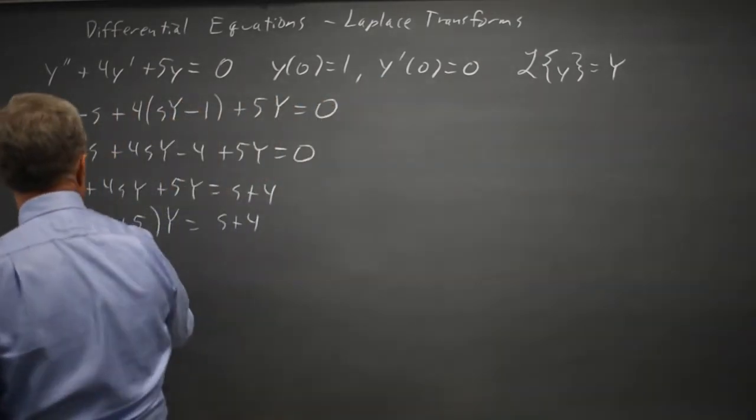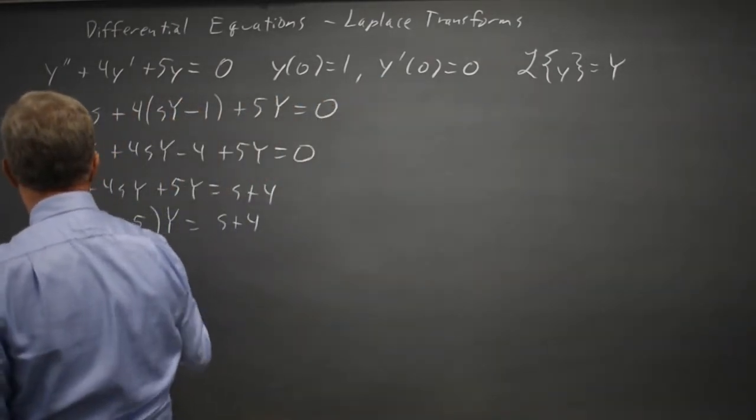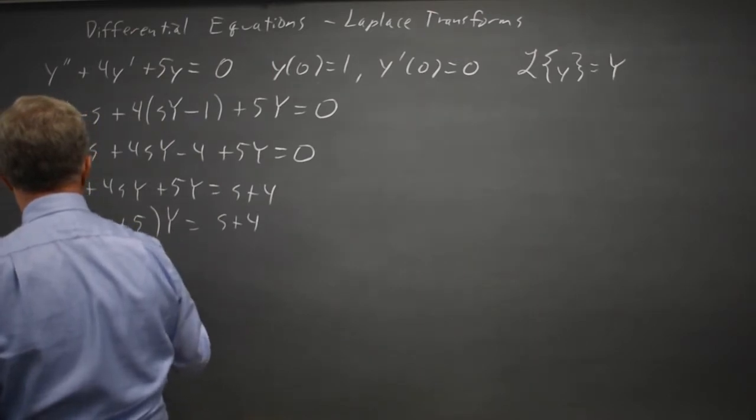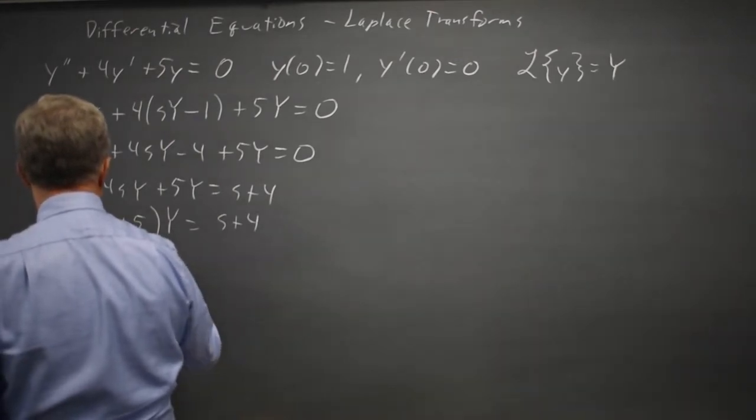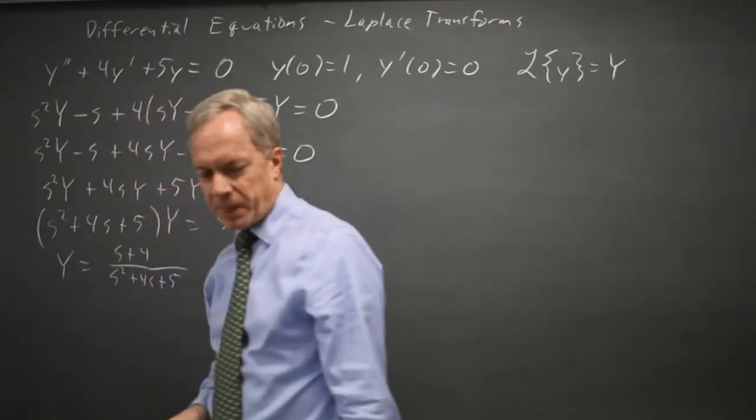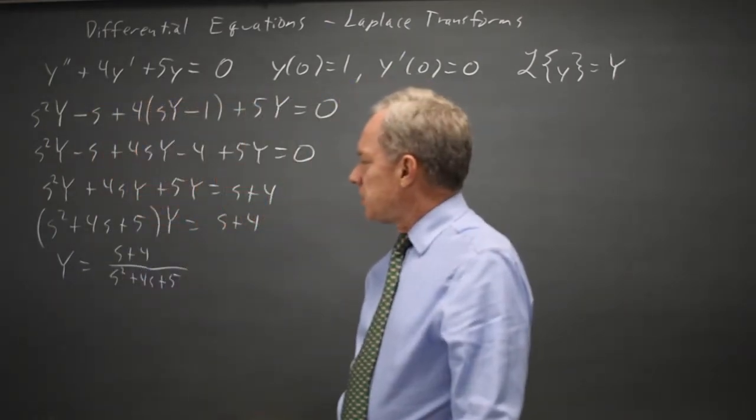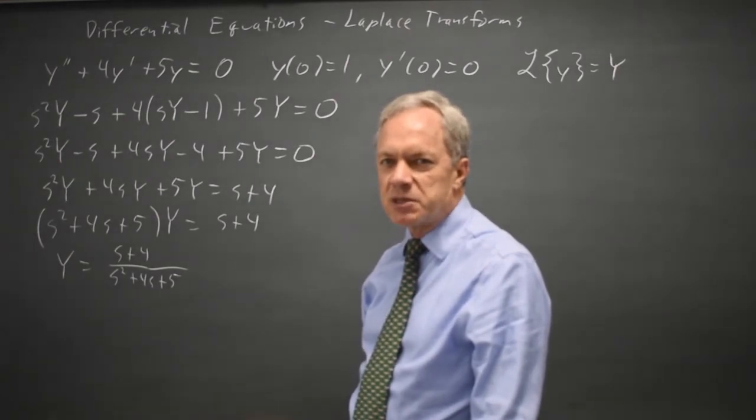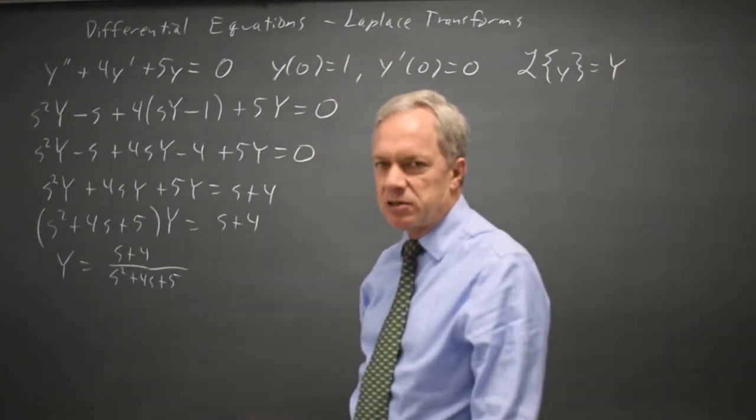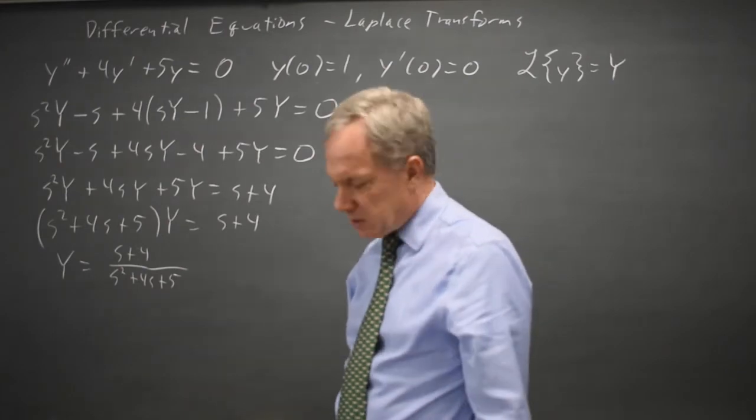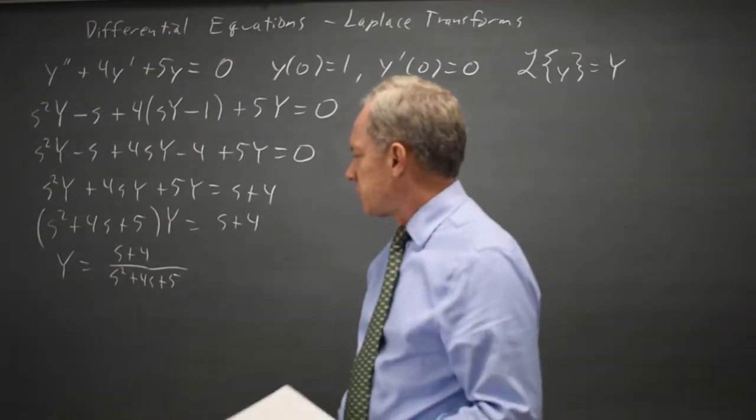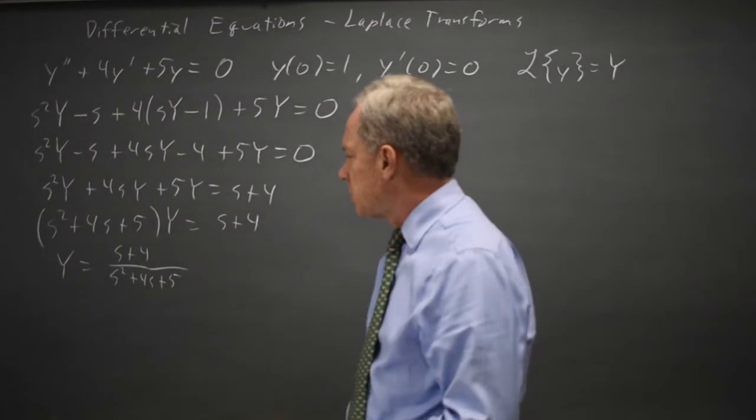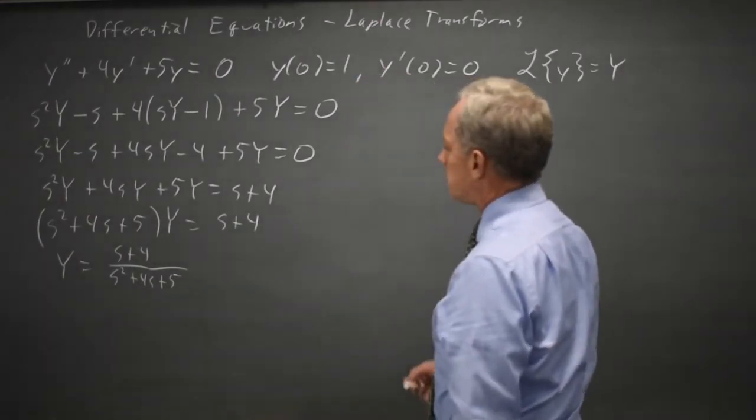Uppercase Y equals s plus four over s squared plus four s plus five. Now in many cases I want to do partial fractions with Laplace transforms, but in this case I can't do partial fractions because my denominator does not factor. What I can do is complete the square.